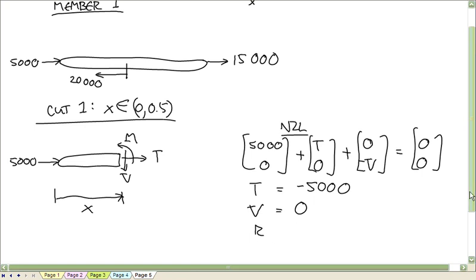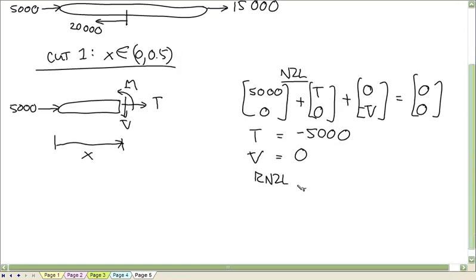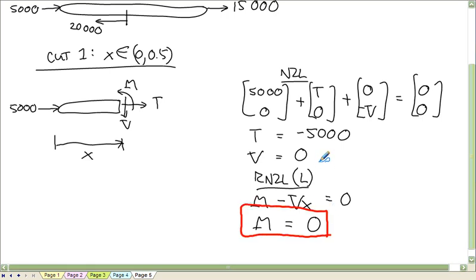And then the rotational equation. We're going to compute that about the left end. The only things producing moments are the bending moment and the shear force times its moment arm. So you get m is equal to 0x. This is for x between 0 and 0.5.